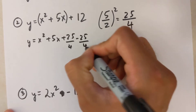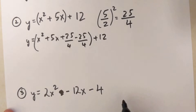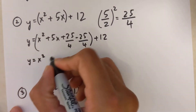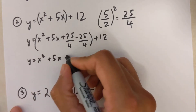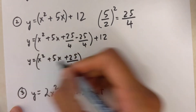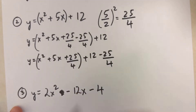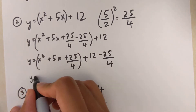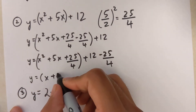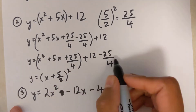So y equals x-squared plus 5x plus 25 over 4 minus 25 over 4, all inside the bracket, with plus 12 on the outside. Moving that term outside the bracket gives y equals x-squared plus 5x plus 25 over 4, plus 12 minus 25 over 4. This is a perfect square: x plus 5 over 2, squared.